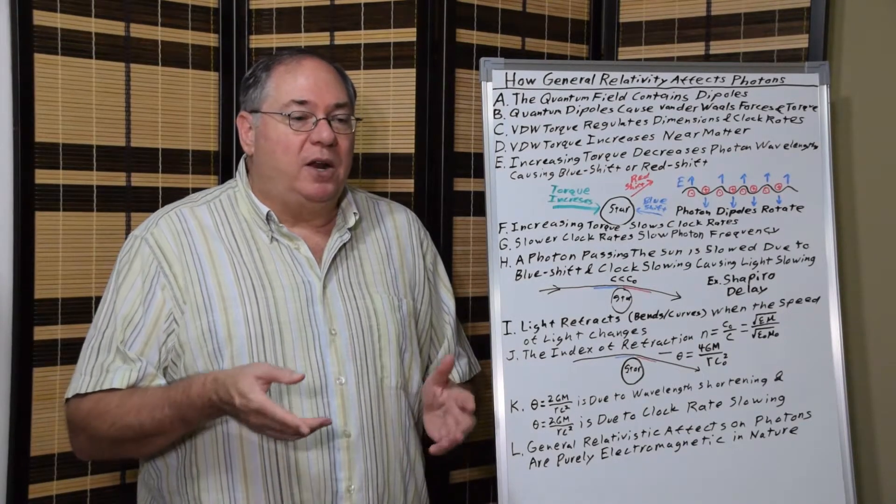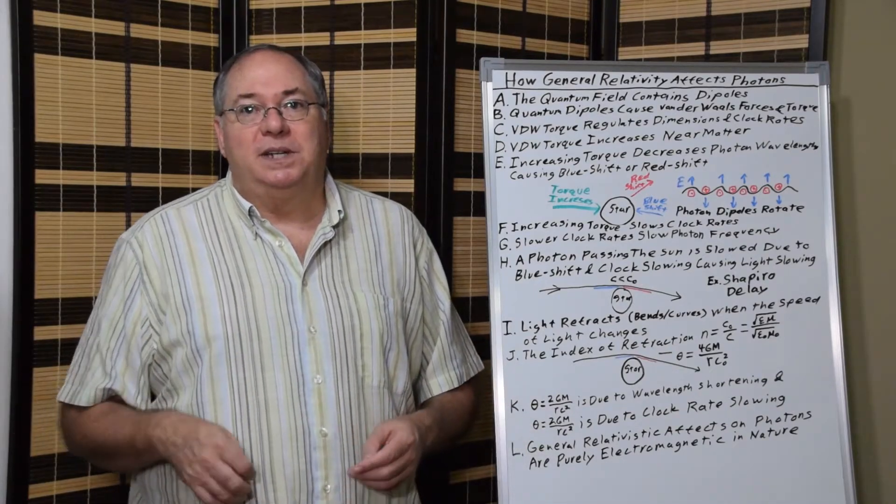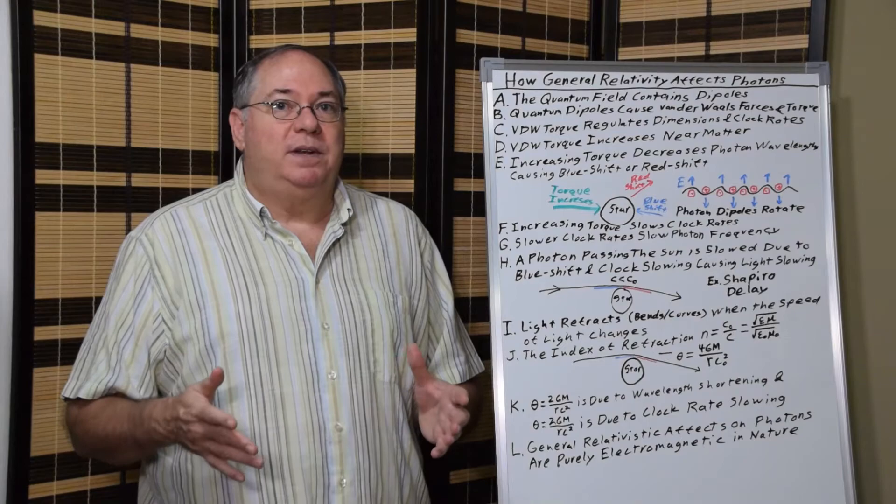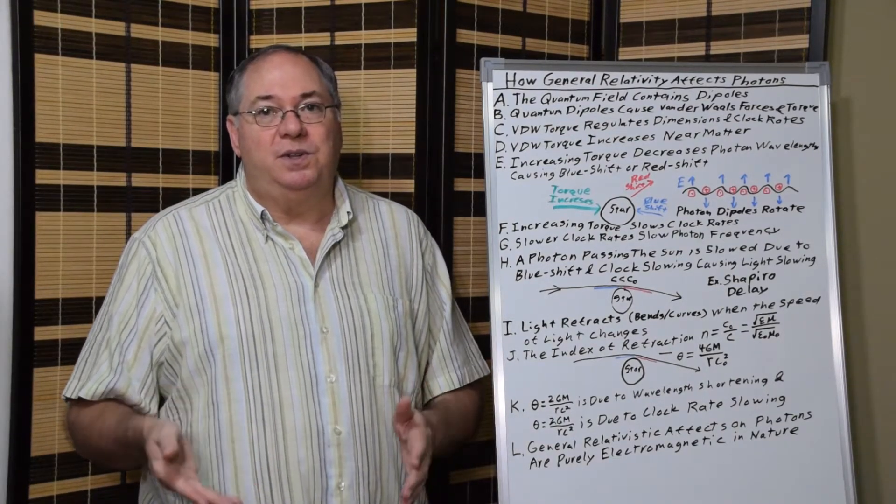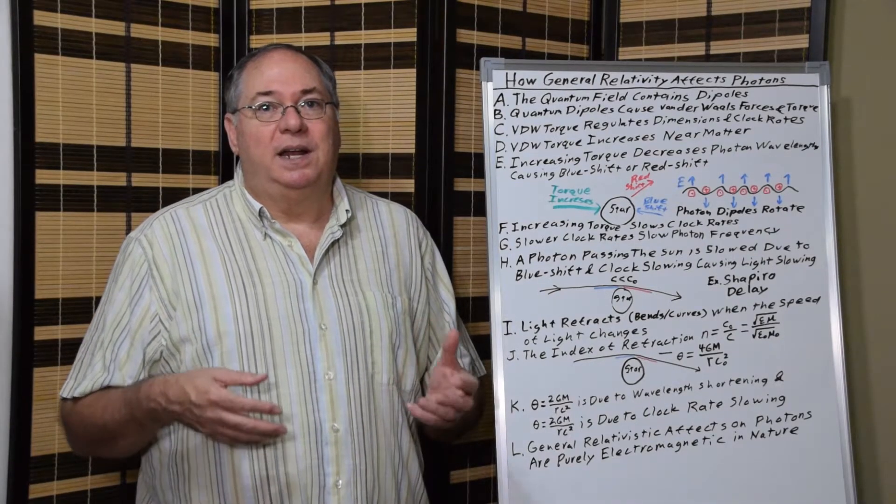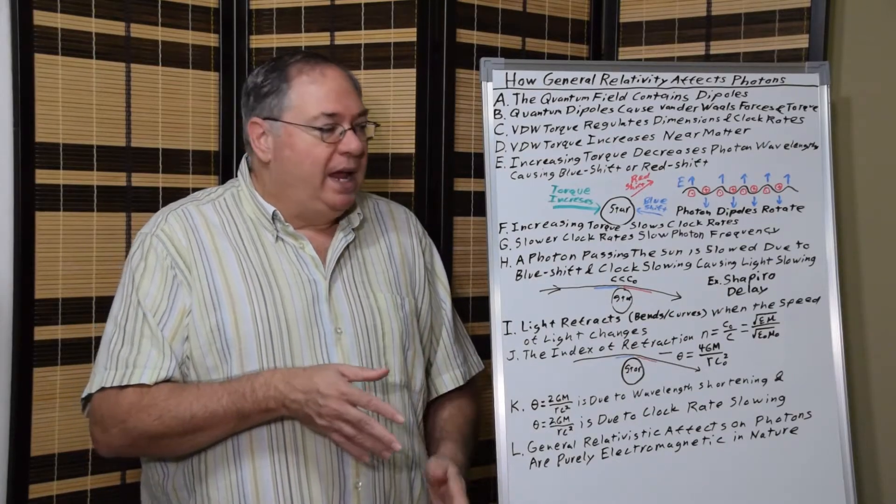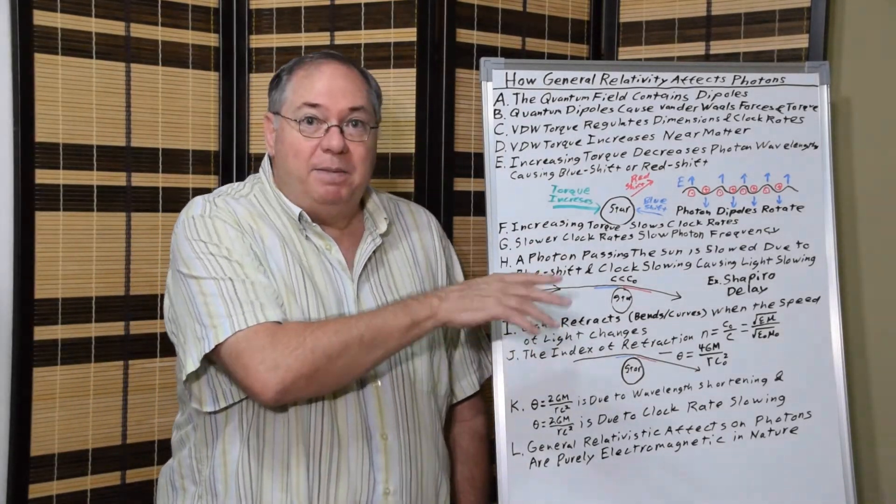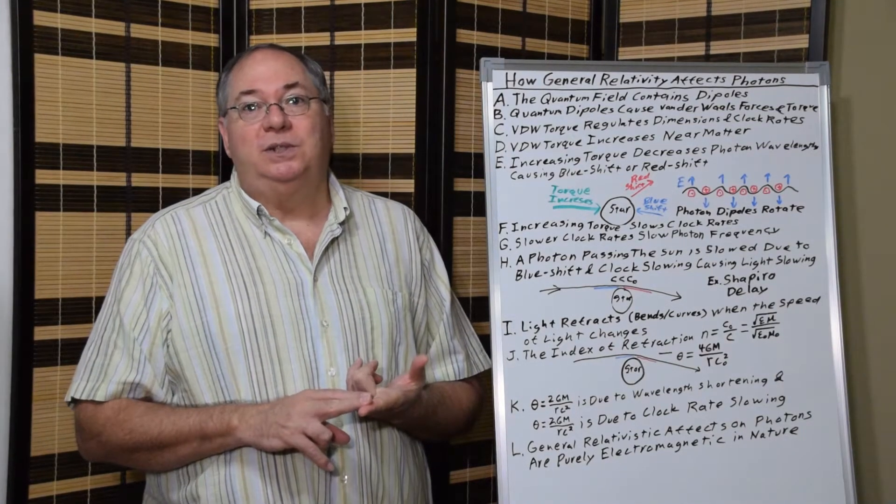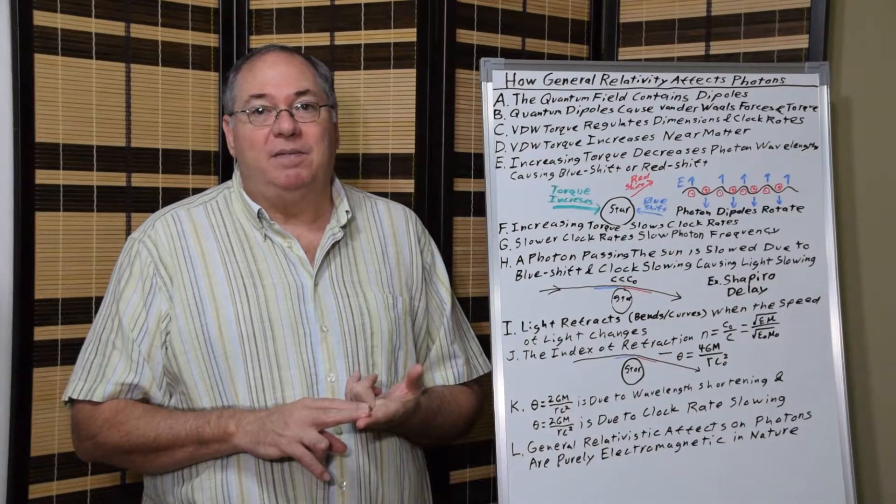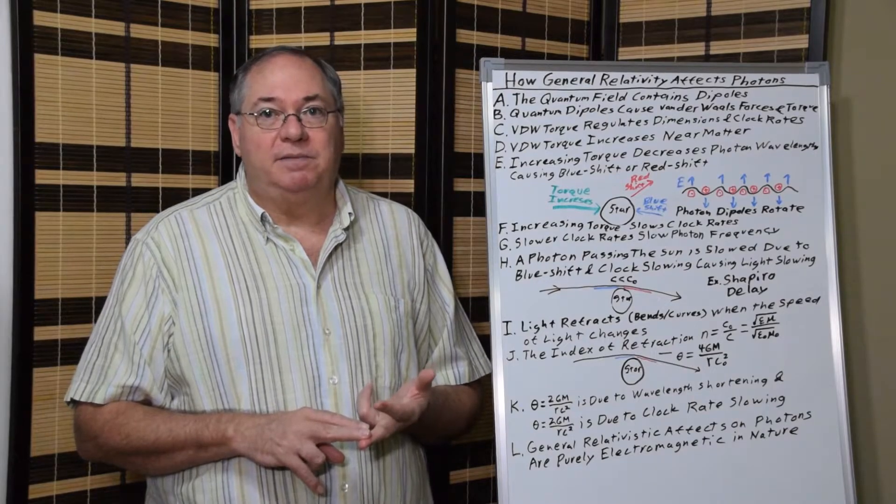We can also put the index of refraction term in terms of permittivity and permeability, where the permittivity and permeability of space increase due to the increasing quantum van der Waals torque near a star. And so the bending angle theta, half is due to the blue shifting, the change in wavelength.